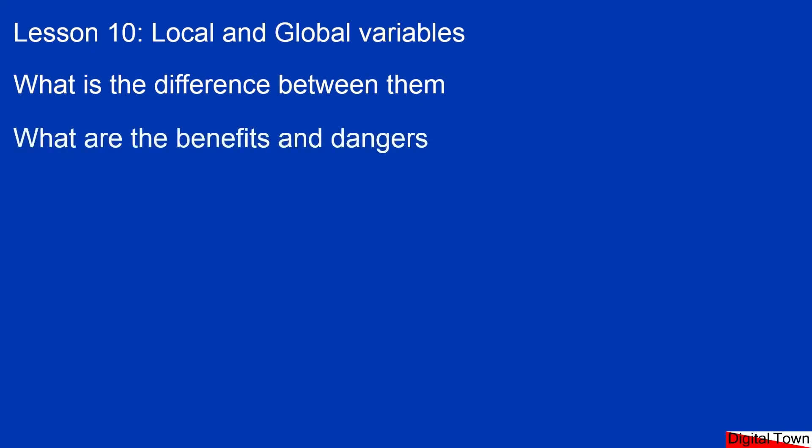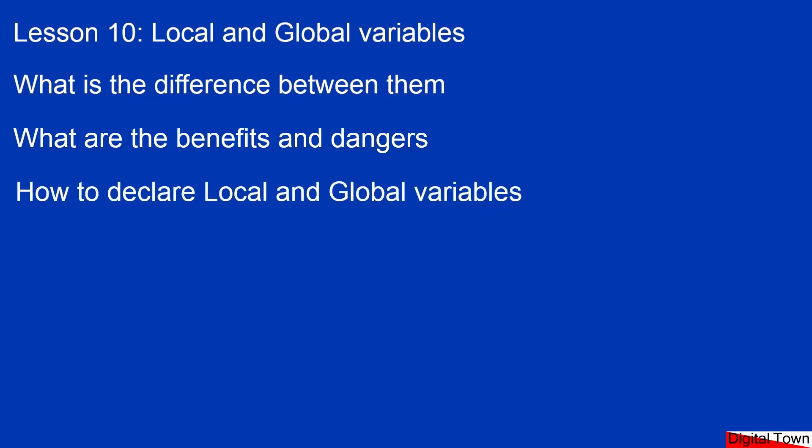We'll look at the benefits and the dangers between the two different types, because there can be some interesting problems that you can come across. We'll also look at how we actually declare the local or global variable within our code. This is going to be a relatively straightforward lesson, but you can look on it almost as an addition to the functions lesson, because you'll start to see how the differences between local and global variables improve with the use of functions and also how they can simplify your code and reduce the chances of getting bugs. So let's get straight on with it and get into the IDE.